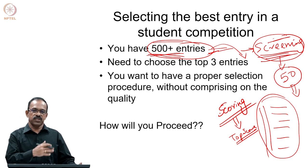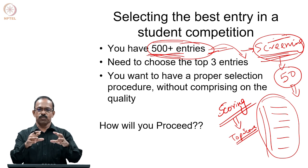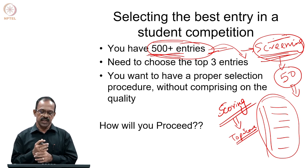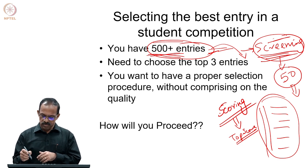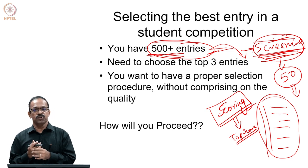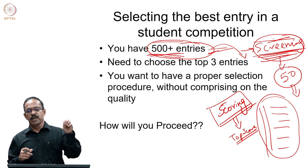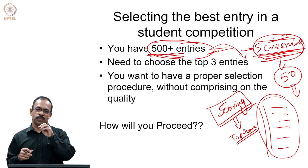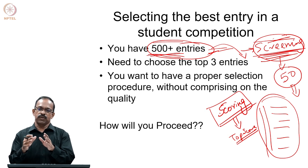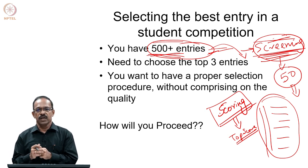In any selection process, you need different stages to bring down a large number of entries to a smaller number, then analyze that small number with focused and objective evaluation to get the top entry selected. These stages are known as screening and scoring. In the concept selection process also, we go through these two stages to choose the best concept. From the large number of concepts, we do a preliminary screening to find potential concepts to take forward, then do a detailed scoring analysis to get the best concept.